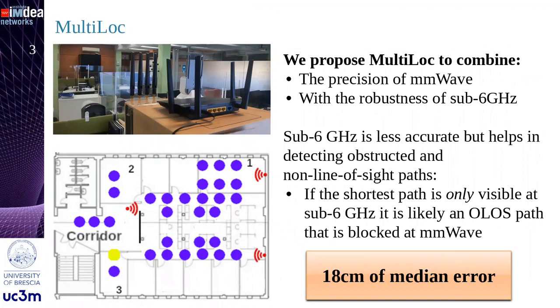Sub-6 GHz helps in detecting mmWave non-line-of-sight conditions: the source path will be available at sub-6 GHz but not at mmWave. Overall, Multi-lock achieves 18 cm of median error.